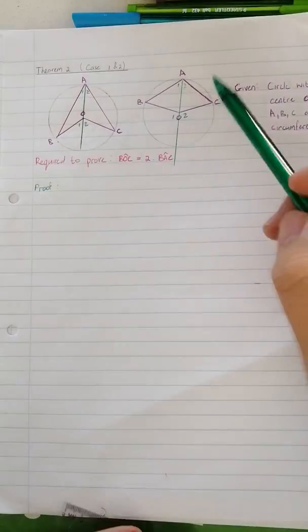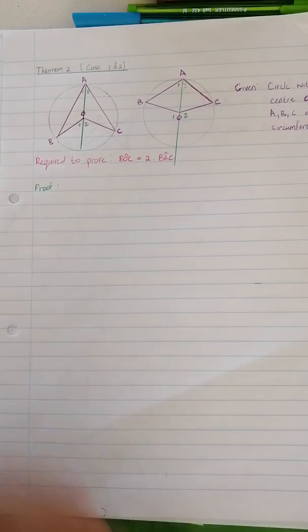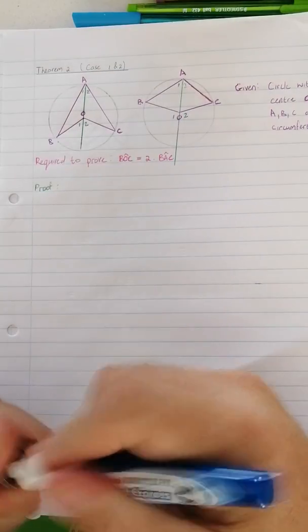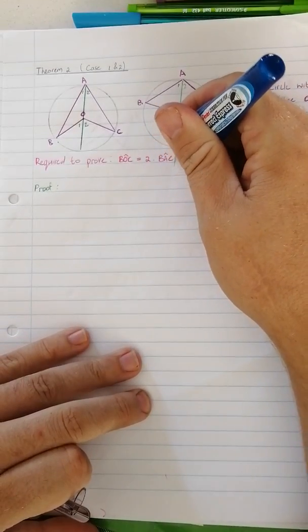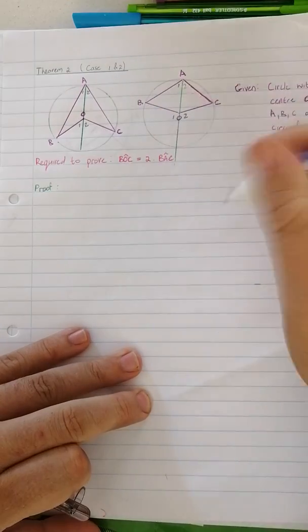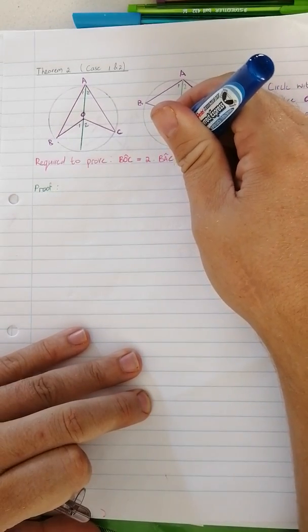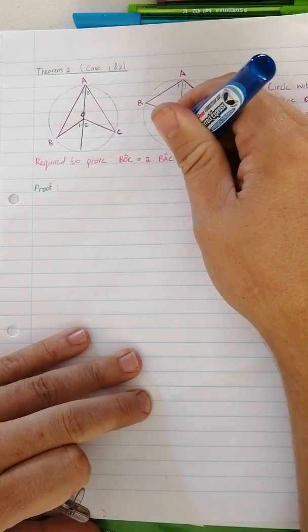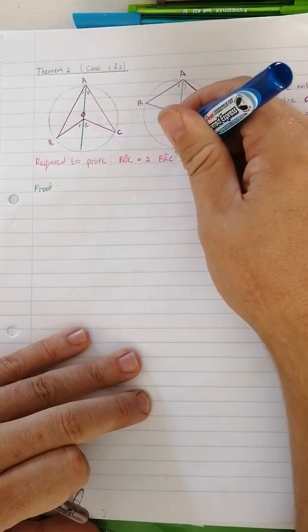Okay, the main thing why I've got two different sketches is because if you look at the theorem it can apply to three different cases. And these are the first two cases that we can be given. So now we can start.